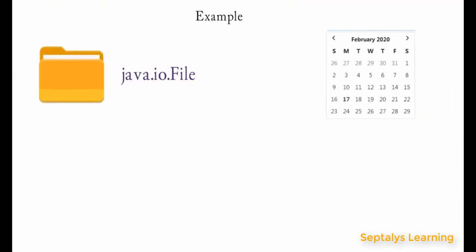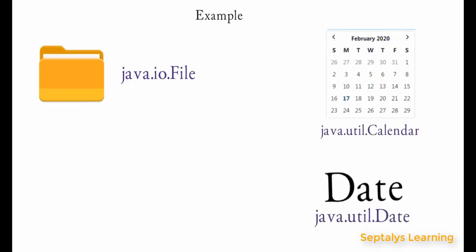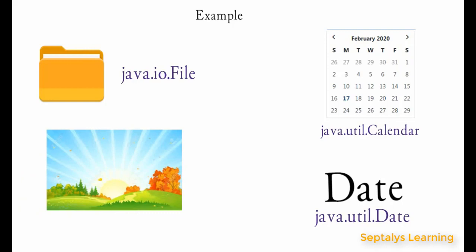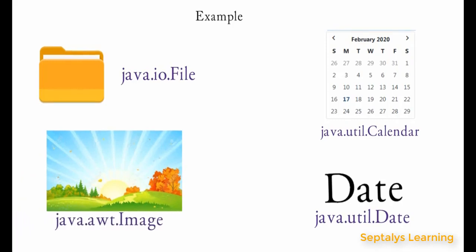For example, a simple file can be treated as an object, a calendar, a date, an image. All are represented by classes and their objects.